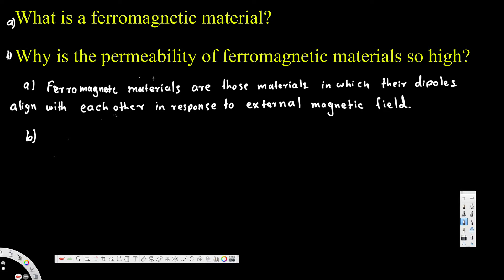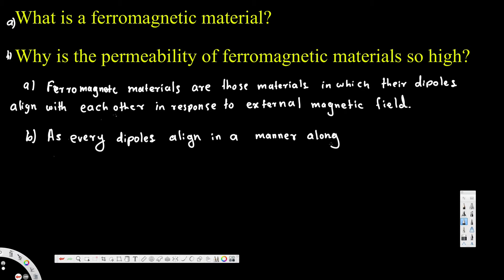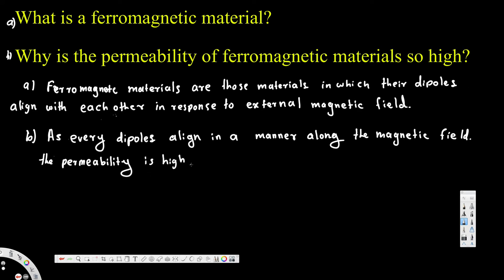Part B is asking: why is the permeability of ferromagnetic materials so high? As every dipole aligns in a manner along the magnetic field, the permeability is high for ferromagnetic materials.